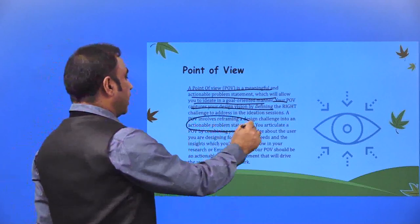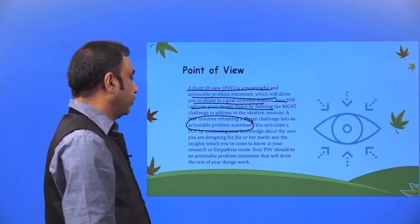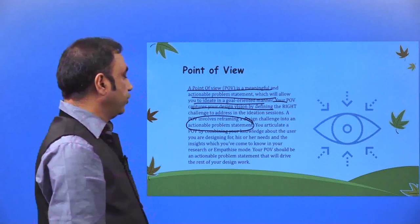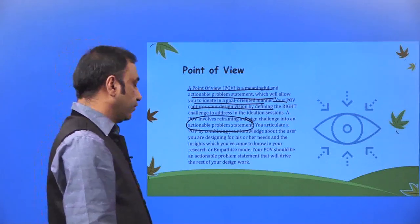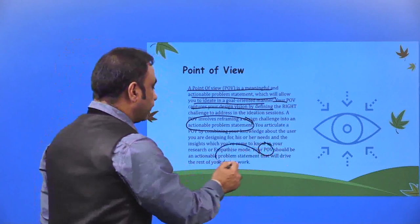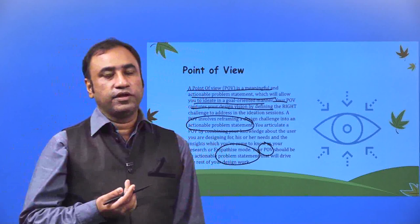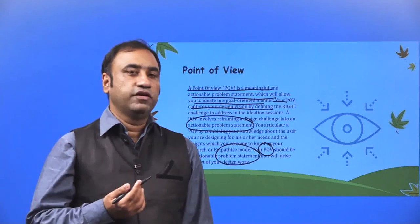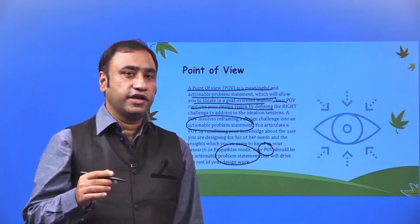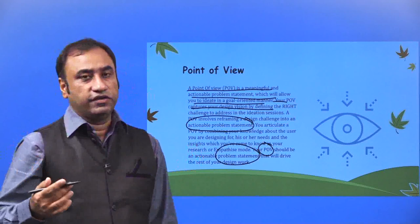The define stage is all about creating an actionable problem statement. You articulate a POV by combining your knowledge about the user you are designing for, his or her needs and insights which you have come to know in your research or empathize mode. Your POV should be an actionable problem statement that drives the rest of your design work. If your POV or problem statement is not clearly defined, the next steps of design thinking fail. Until you have a very detailed and clear understanding from the problem statement, the rest of the design work doesn't work at all.